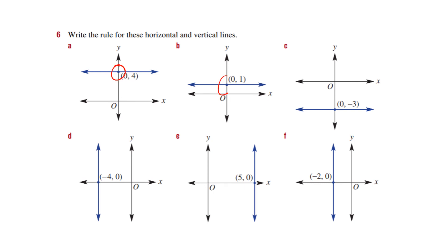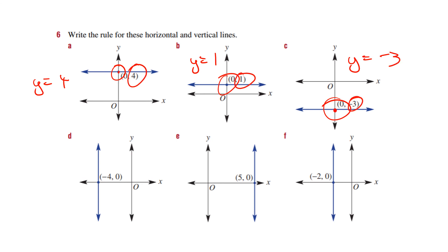For horizontal and vertical lines: the horizontal lines all give y equals something — y equals 4, y equals 1, y equals negative 3 — because that's where they cut the y-axis. For the vertical lines, it's x equals something — x equals negative 4, x equals 5, and x equals negative 2.